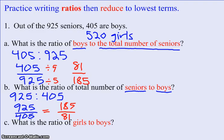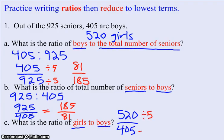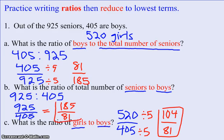The last problem says: what is the ratio of girls to boys? Girls were listed first, so that number goes in the numerator. Boys was listed second, so that number goes in the denominator. So girls, 520, over boys, 405. That is a ratio, but I can reduce it — since the numerator ends in a zero and the denominator ends in a five, I can divide both by 5, giving me 104 over 81. That is the ratio written in reduced terms.